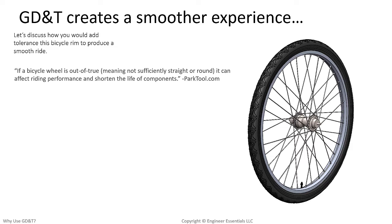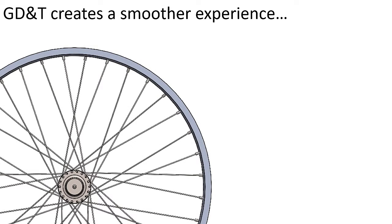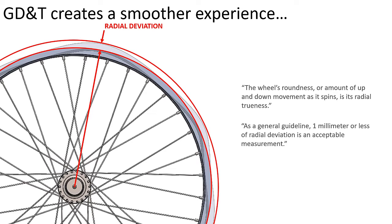Let's picture a bicycle tire and rim. Any major deviation in the diameter of the rim could easily affect riding performance or shorten the life of components due to stresses from vibrations caused by the rim not being perfectly round. The wheel's roundness, or amount of up-and-down movement as it spins, is its radial trueness. This is the deviation we will be controlling in order to ensure a smooth ride. We've shown some exaggerated deviations in the radial trueness of this rim.